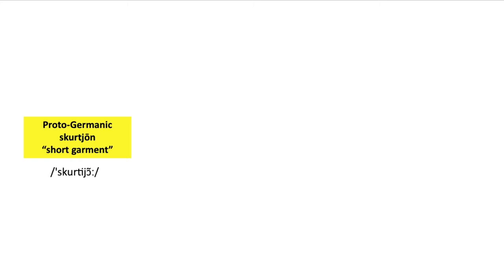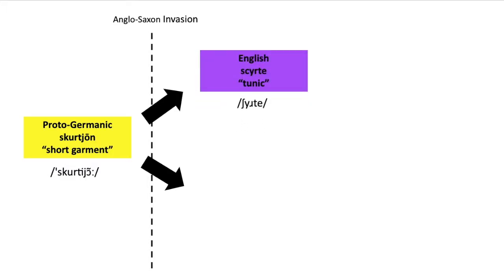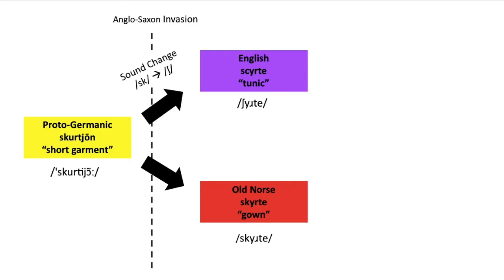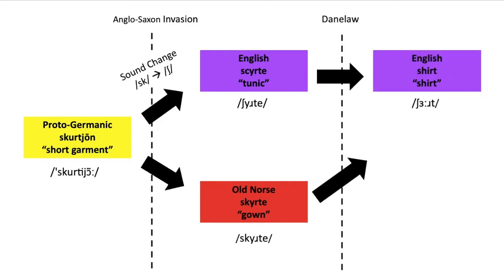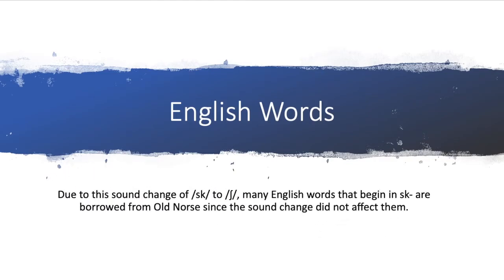Well, you can start off with the origin word of shirt and skirt. There was a sound change — the 'sk' turns into an 'sh' sound. In Old Norse, they kept that 'sk.' And after the Danelaw, English had 'shirt,' but they also borrowed the Old Norse version and got 'skirt.' So now they have two words from that same original word. That sound change from 'sk' to 'sh' shows that many English words beginning in 'sk' are actually loan words from Old Norse, because the sound change didn't affect them.